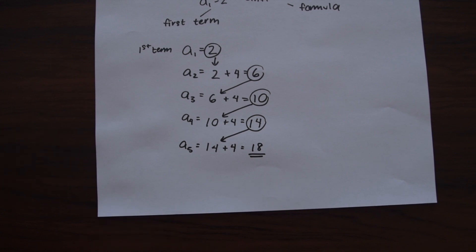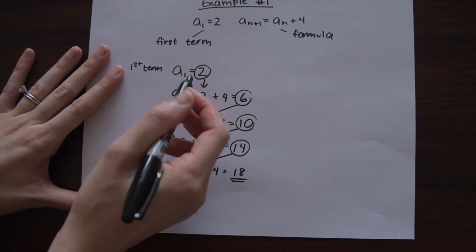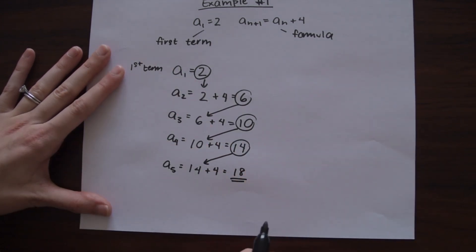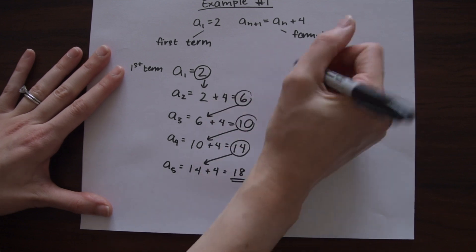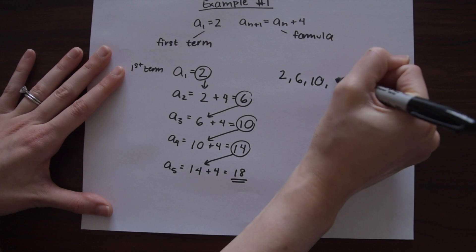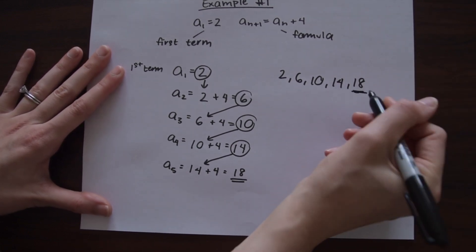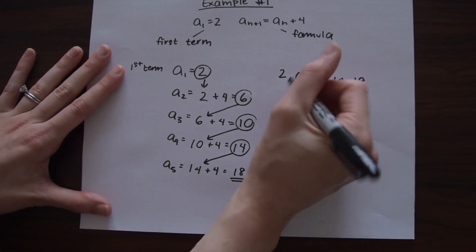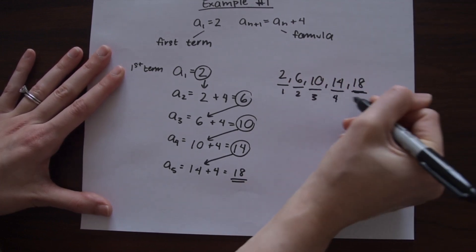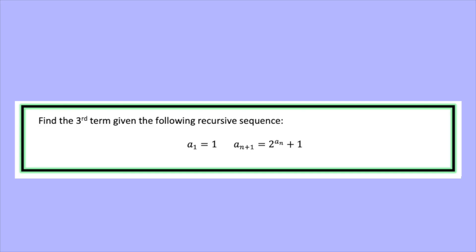Just to clarify what we're doing: we made a sequence and could keep going, but they wanted the fifth term. The sequence we made using the given information is 2, 6, 10, 14, 18 — those are the first through fifth terms respectively. We stopped here because they just wanted the fifth term. Now let's look at another example.